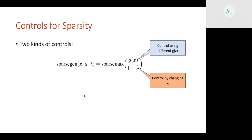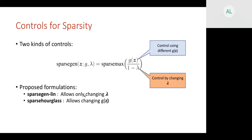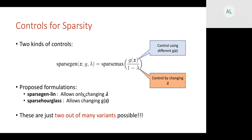There are two ways to control sparsity using the SparseGen framework: through the g(Z) function and through the parameter lambda. We propose two formulations: SparseGen-Lin, which controls sparsity by changing only the lambda parameter, and Sparse Hourglass, which controls sparsity by changing only the g(Z) function. Since this is a family of probability mapping functions, many other variants could be produced. We have also shown that this framework is a generalization of all other known probability mapping functions.